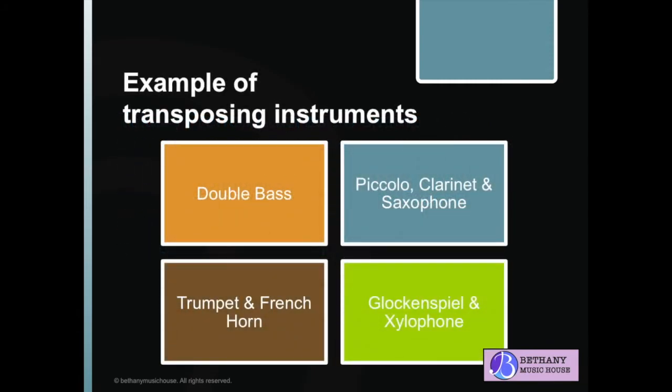Examples of transposing instruments are double bass, piccolo, clarinet, saxophone, trumpet, French horn, glockenspiel, and xylophone.